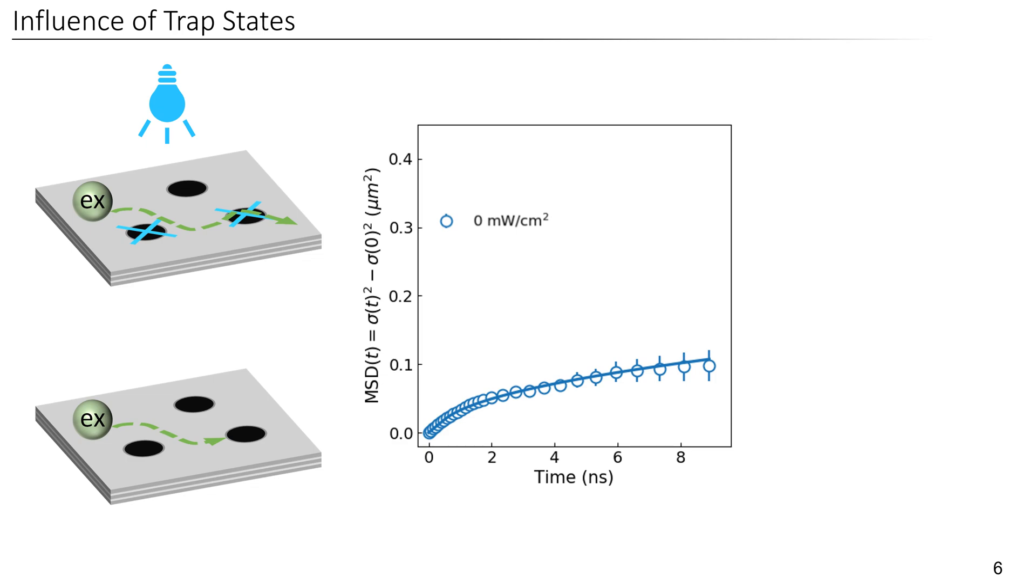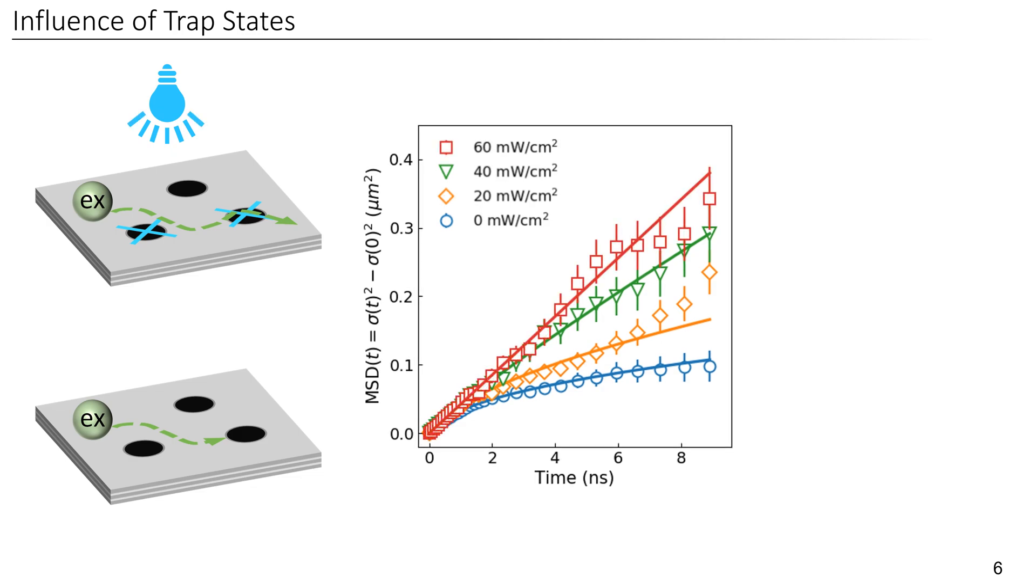To test this hypothesis, we performed transient photoluminescence microscopy with different background illumination intensities. Here you can see again the result without any background illumination. You can see a linear regime in the beginning and a clear sub-diffusive regime for later times. Now, when applying background illumination, we indeed see that the sub-diffusive part becomes less pronounced and even vanishes for high enough fluences. You can see that also by looking at the alpha parameter that approaches one for high enough fluences.